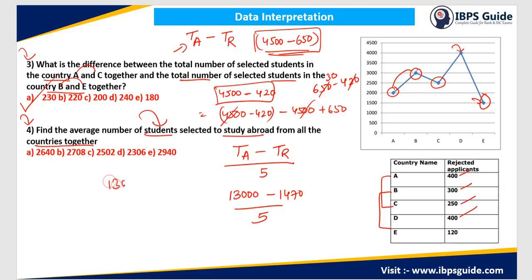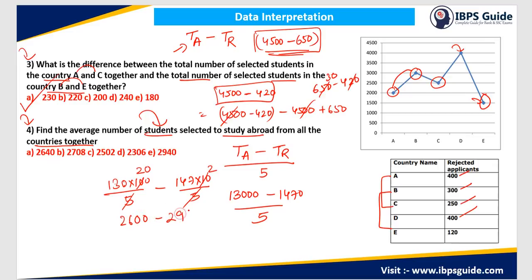We separate these: 13,000 divided by 5 minus 1470 divided by 5. That gives us 2600 minus 294, which equals 2306. So the answer is Option D. All four questions in this DI are very easy if you are well acquainted with the graphs provided. If you understand the graphs and what information they contain, you can solve it in minimum time.